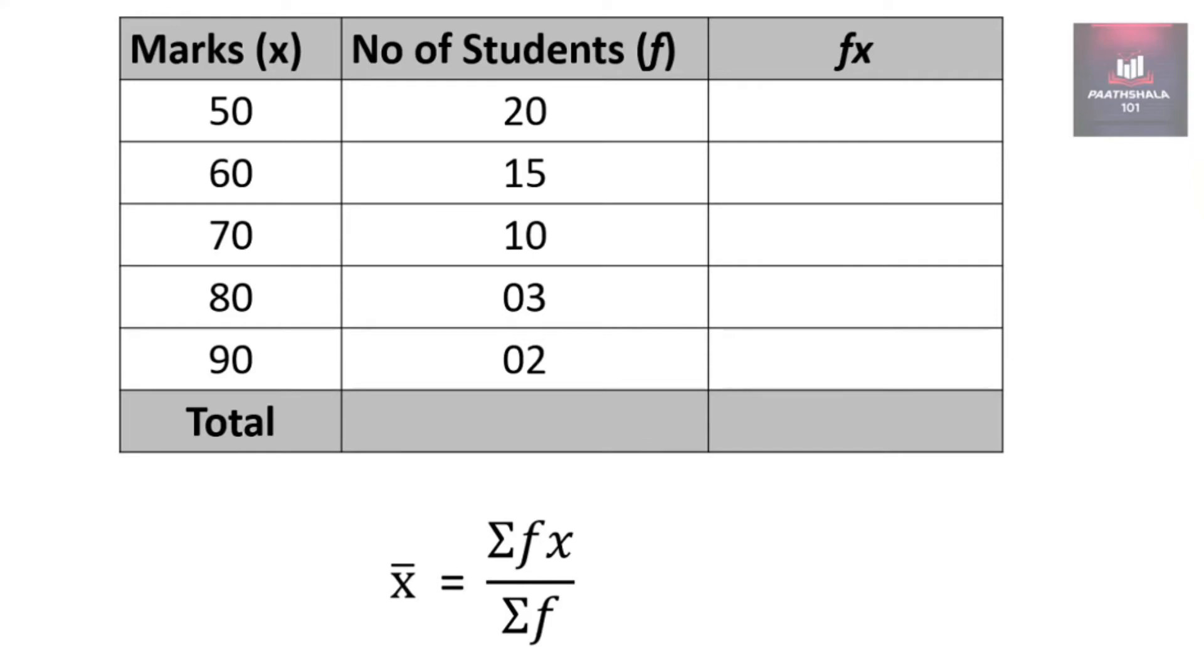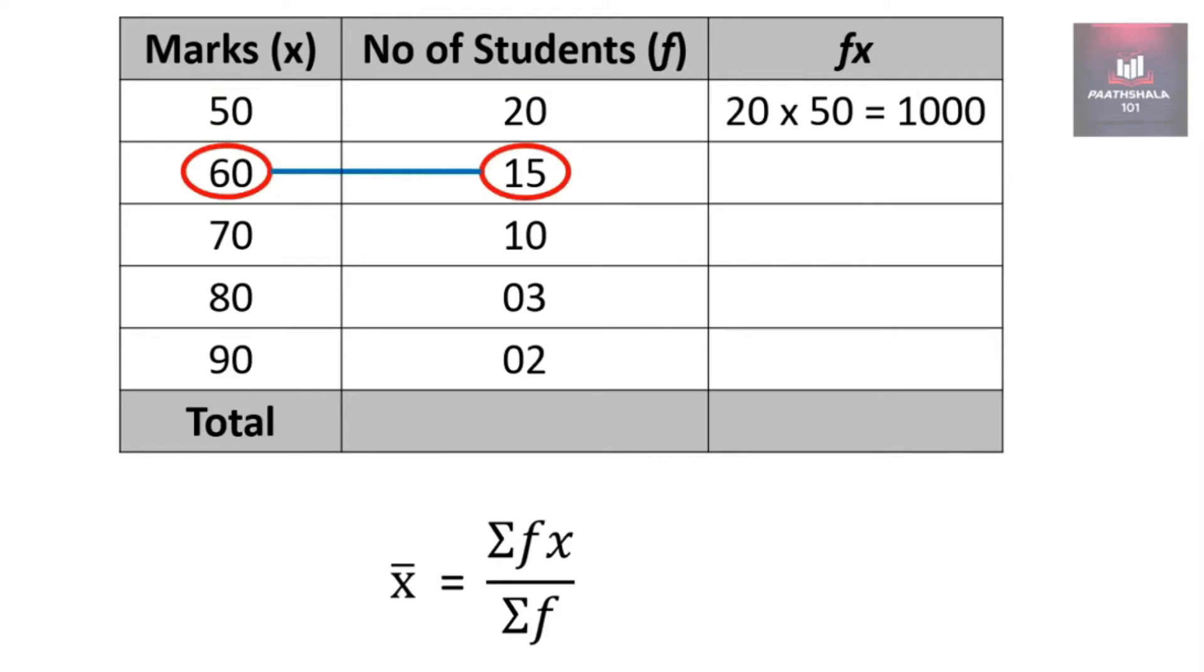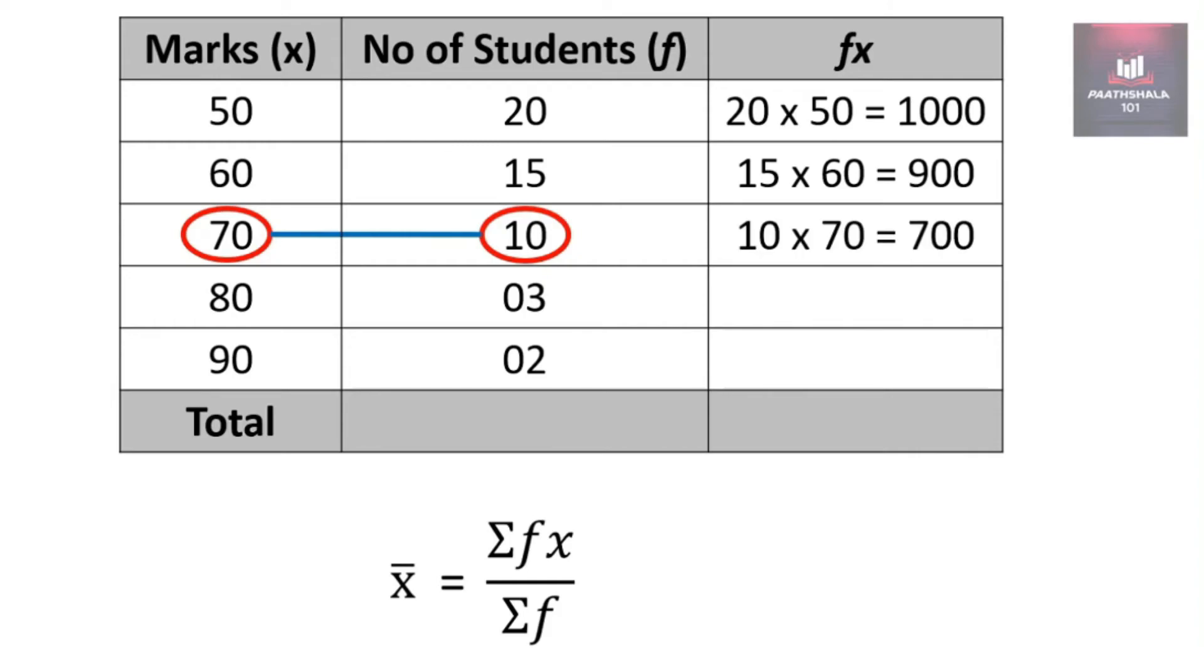Now for the first row, fx is the product of f and x. So it will be 20 and 50, and the product of them is 20 into 50 which comes to 1000. For the next row it will be 15 and 60, product of them will be 15 into 60 which is 900. For the next row it will be 10 and 70, so 10 into 70 is 700.